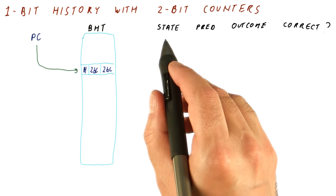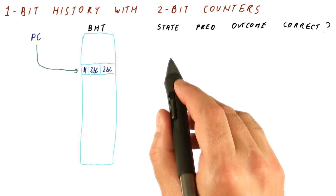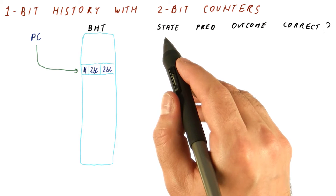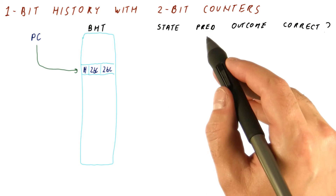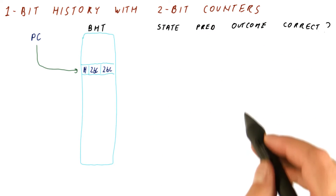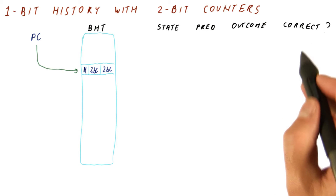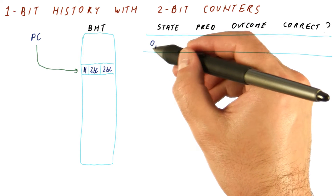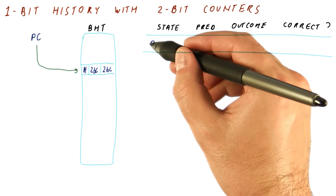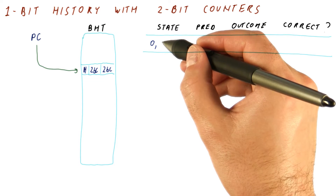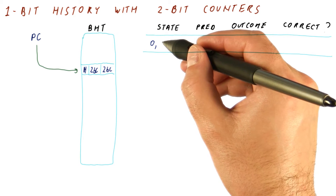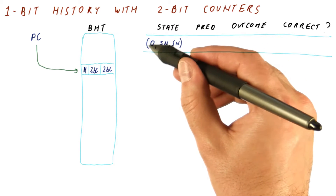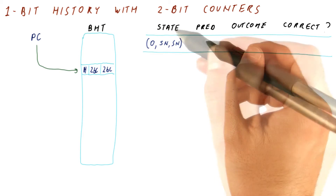Now let's look at the behavior of this predictor over time. We have the predictor state, the prediction, the outcome, and whether the prediction was correct. Let's start the predictor in a state where the history bit is zero, and the two two-bit predictors are both in the strong not taken state. All three of these together are now the state of the predictor.